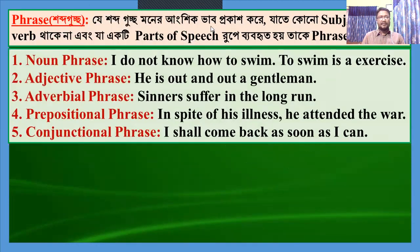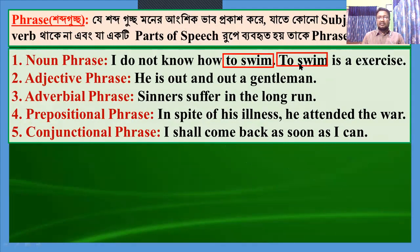There are five kinds of phrases: noun phrase, adjective phrase, adverbial phrase, prepositional phrase, and conjunctional phrase. Noun phrase example: 'I do not know how to swim.' 'To swim is a good exercise.' Here, 'to swim' is a noun phrase.